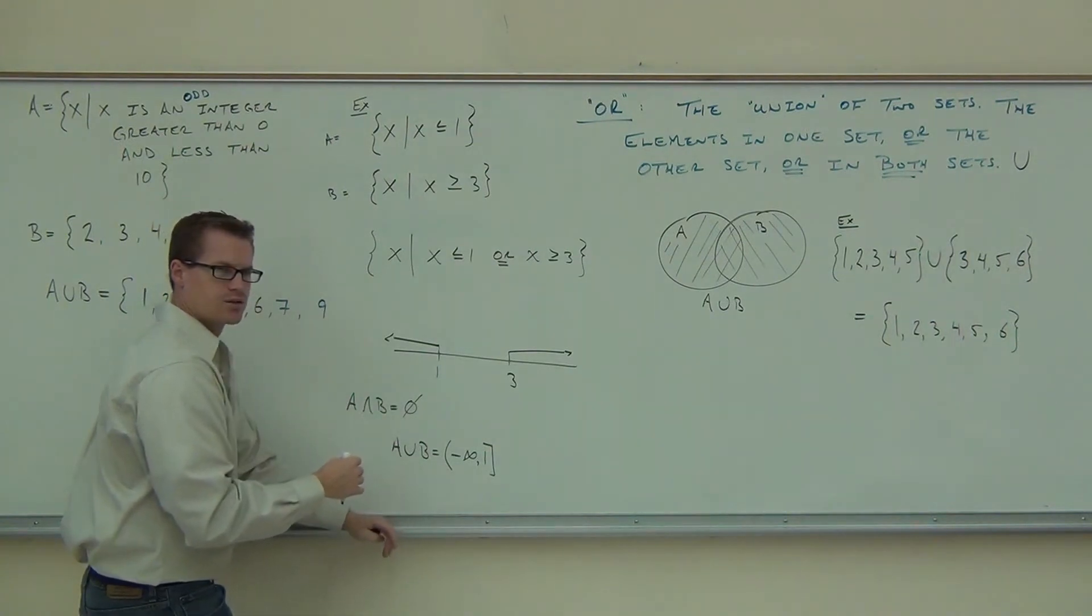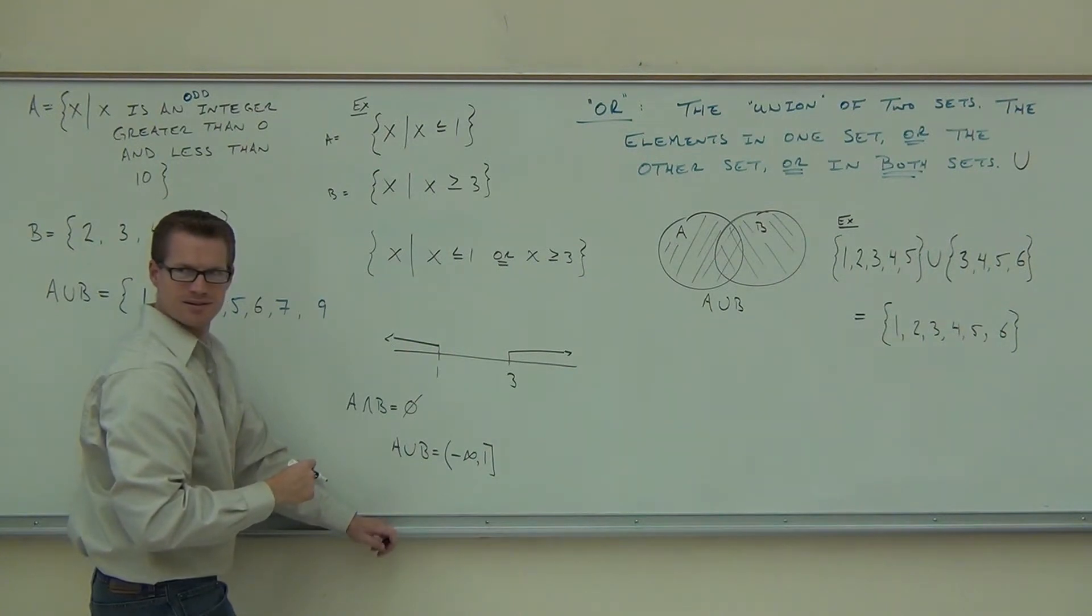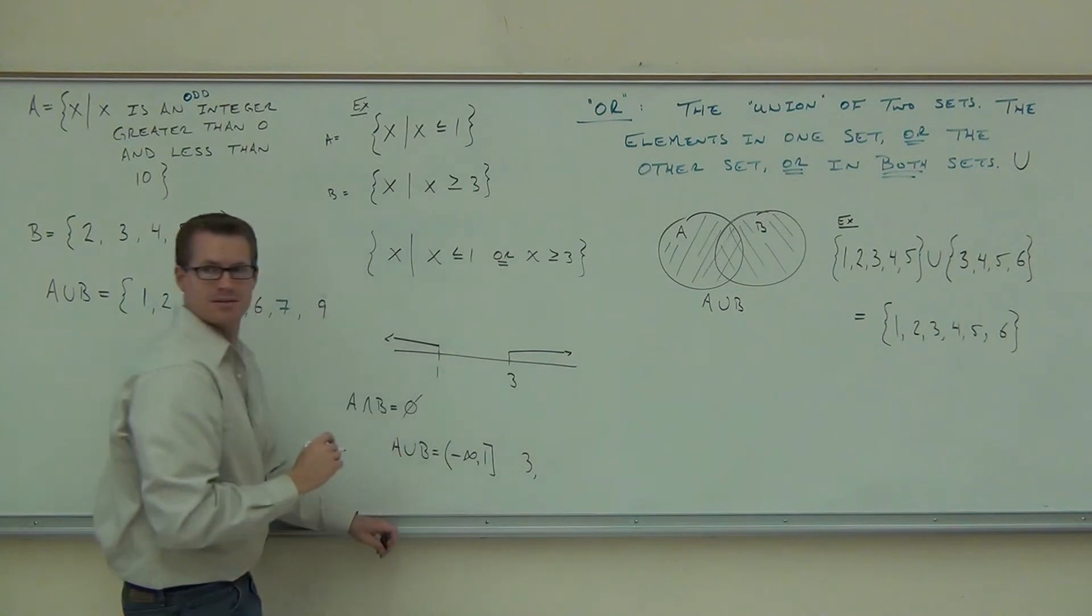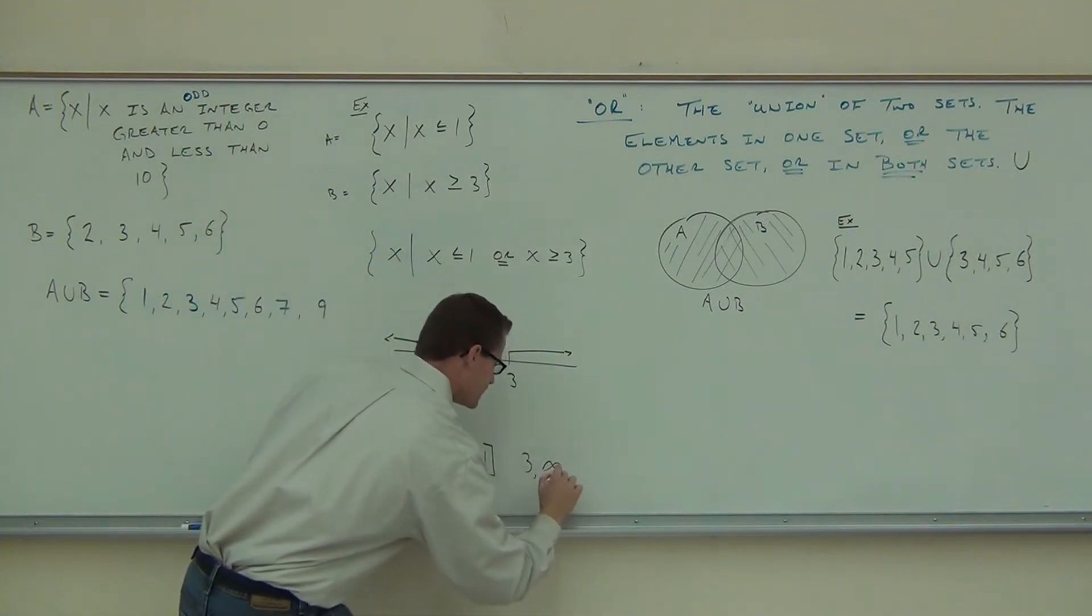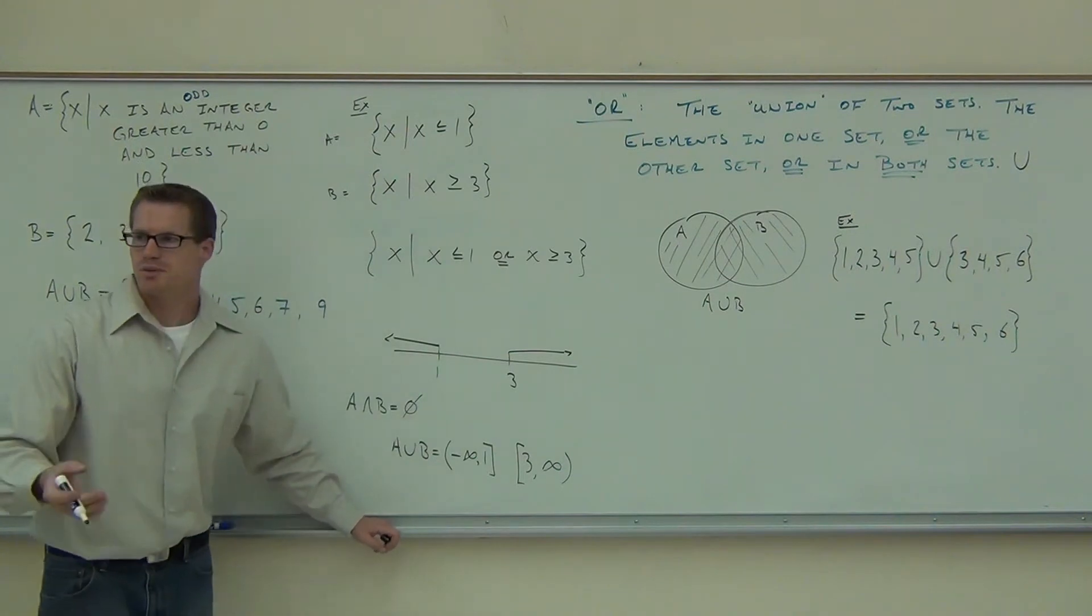The other interval is, where's the other interval? The other interval starts at 3. Where's it end? Negative infinity. Parenthesis. Of course, we have a bracket.